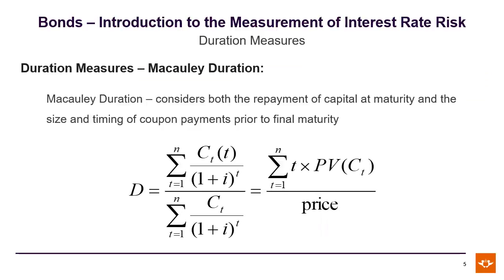For the Macaulay duration, it considers both the repayment of capital at maturity and the size and timing of coupon payments prior to final maturity. Each cash flow, or the discounted value of each cash flow, is multiplied by its time. So essentially, the cash flow at maturity — if maturity was 10 years — would be 10 times the present value of cash flow 10. The reason for this is that as cash flows get further into the future, their present values get smaller and smaller, so they are weighted by time to give their present value more impact.